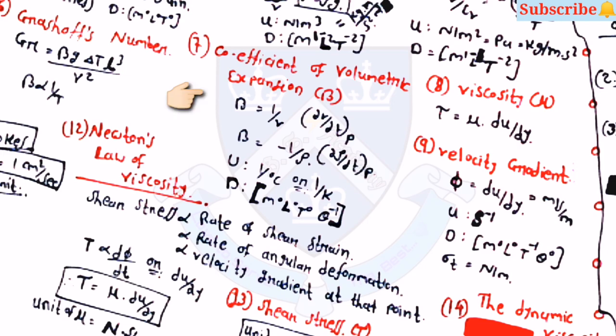The dimension of beta is m0 l0 t0 theta-raised-to-minus-1. Viscosity mu equals tau into du by dy, and velocity gradient phi equals du by dy, which equals meters per second per meter, so the unit is s-raised-to-minus-1 (second inverse). The dimension is m0 l0 t-raised-to-minus-1. Surface tension sigma-T has the unit newton per meter.